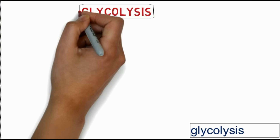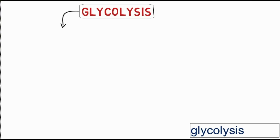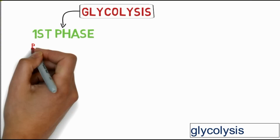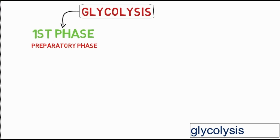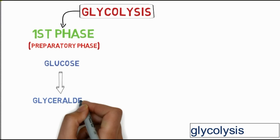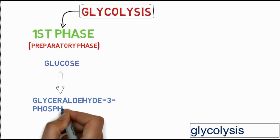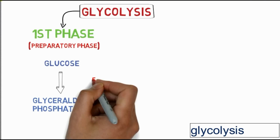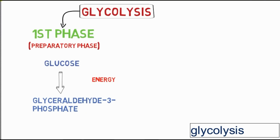Glycolysis contains two phases. In the first phase, called the preparatory phase, the glucose molecule is converted into glyceraldehyde-3-phosphate. In this phase, energy is being utilized.